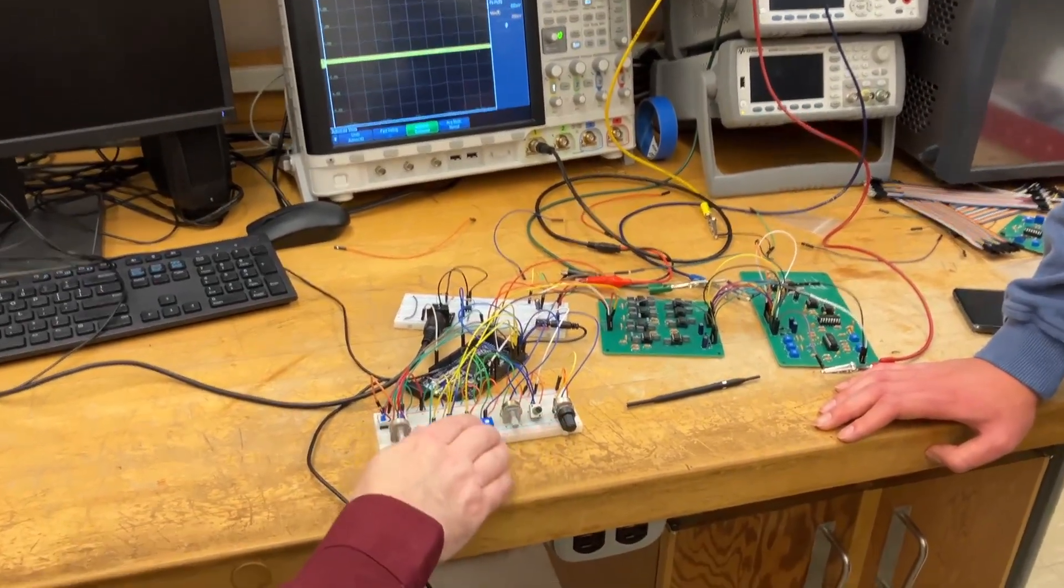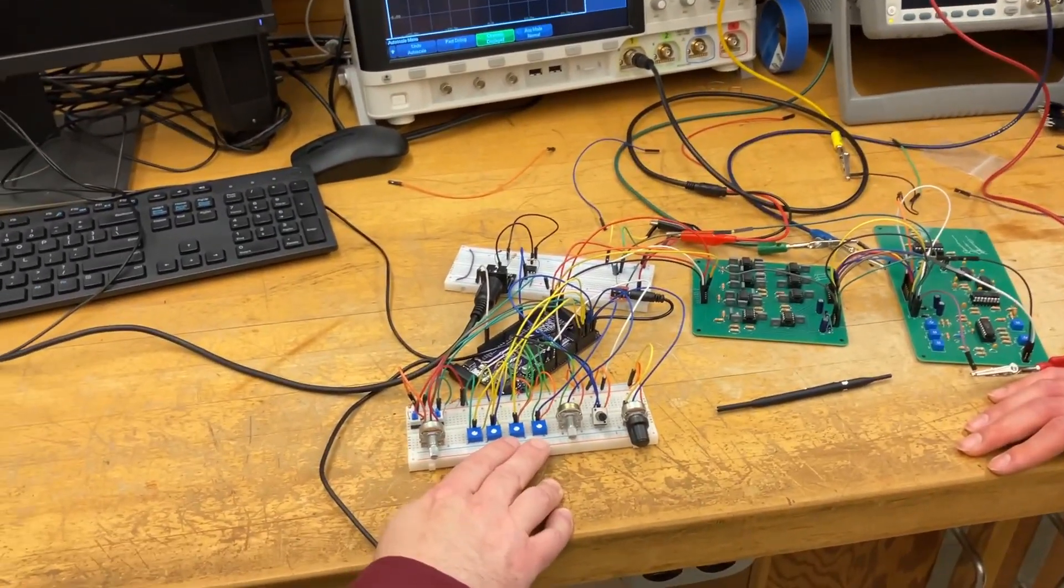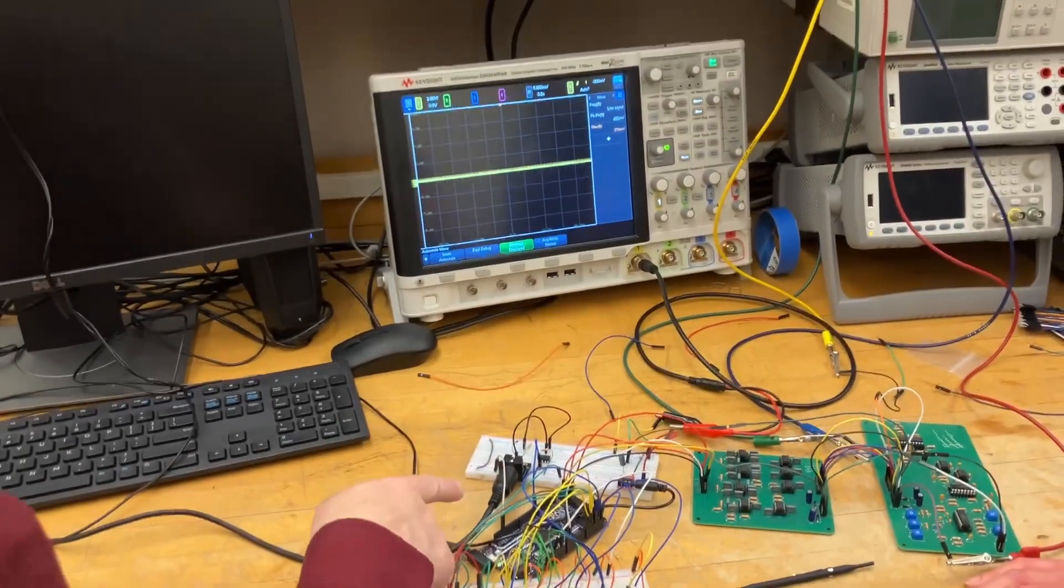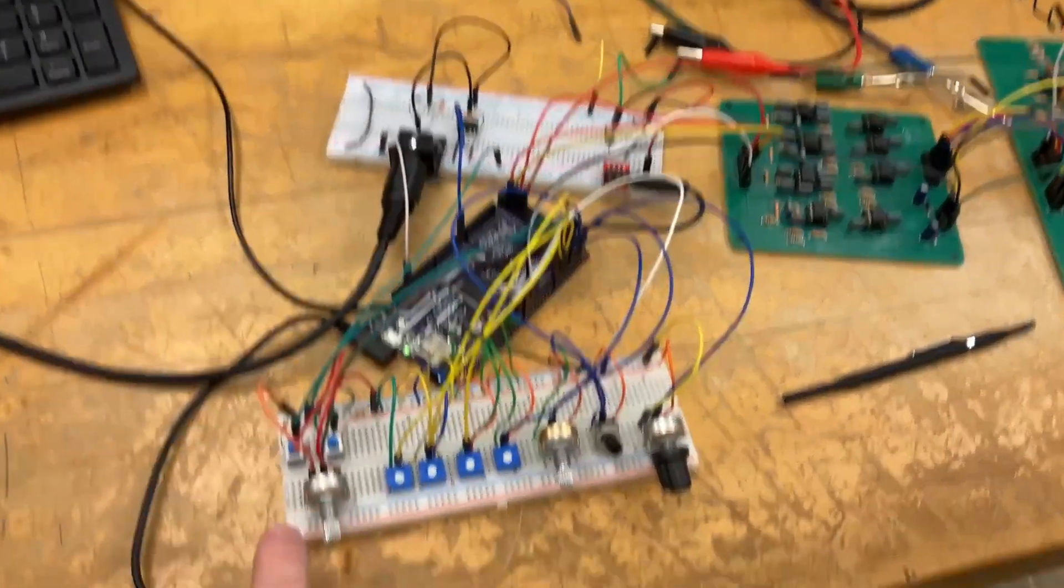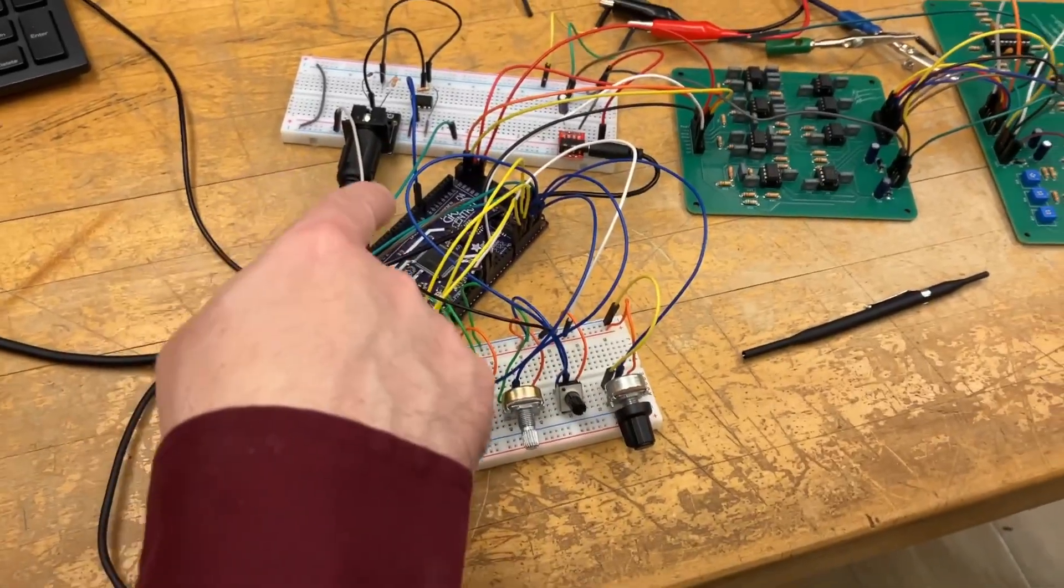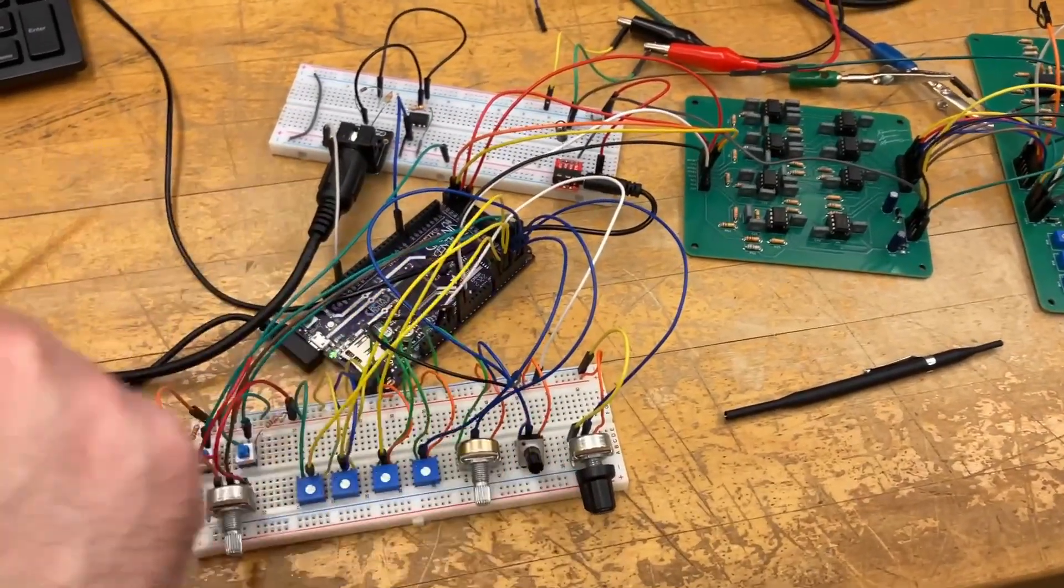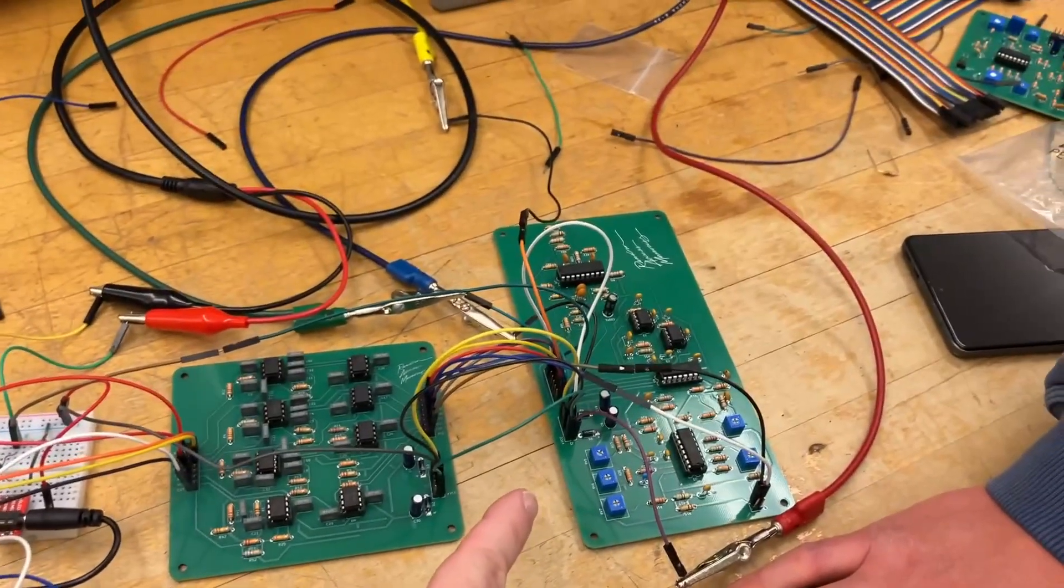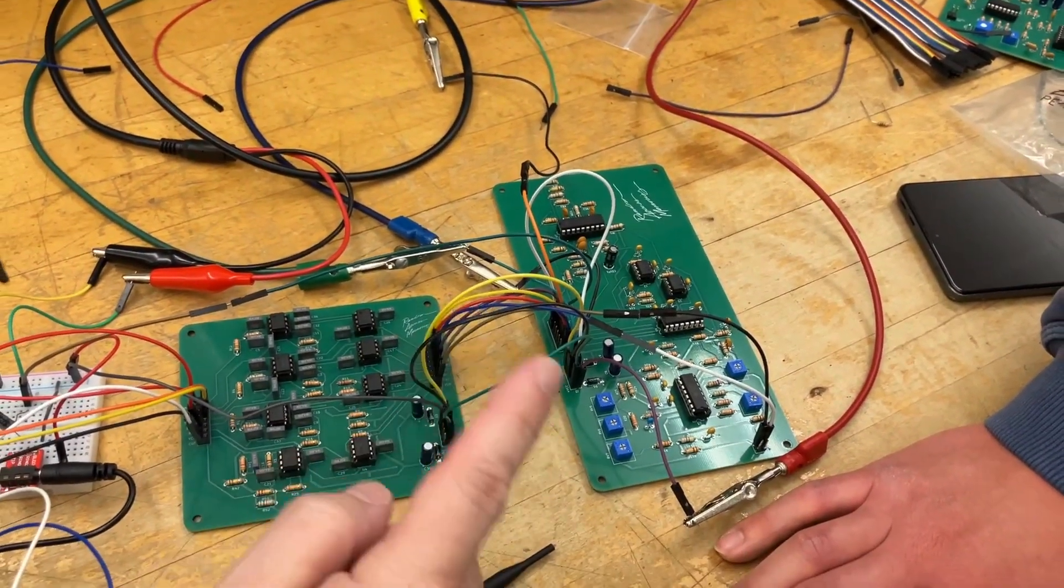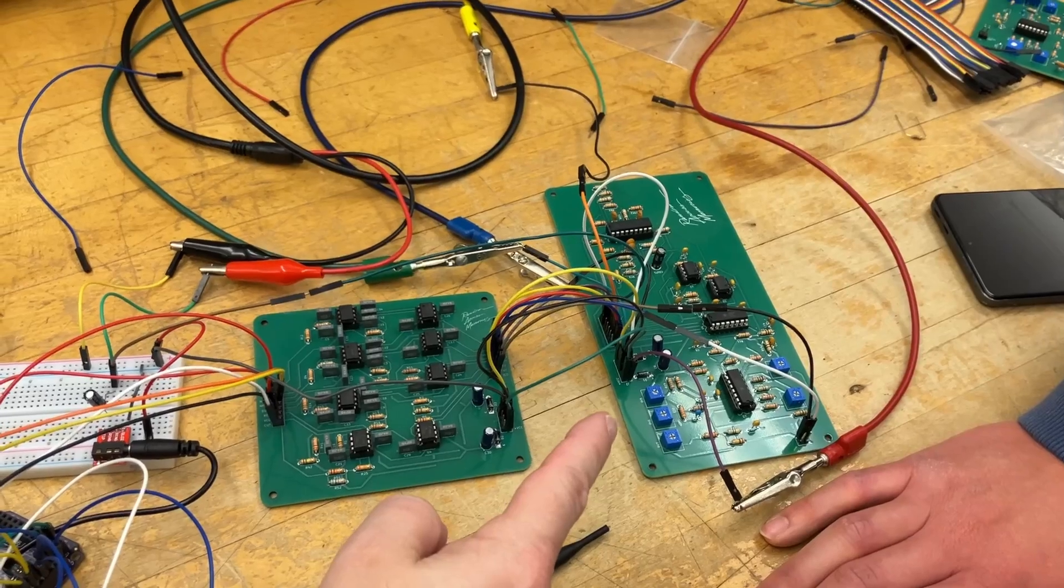Right now what they're testing is the interface from the front panel to the Adafruit Grand Central Metro M4 that reads the knob values using the analog to digital converters. There's a couple of digital analog converters that are driving the oscillator pitch and the frequency of the voltage controlled filter.